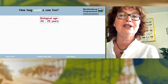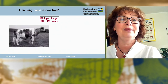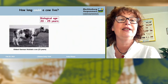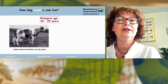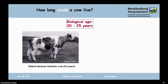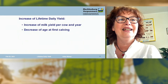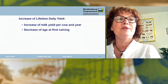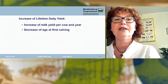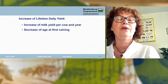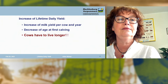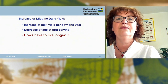Do you have such old cows? There are some — one of the oldest German Holstein cows you can see here. By the way, the name is Nonsense, in German Unsinn. The cow on the right-hand side became even 32 years old. Increase of lifetime daily yield is possible by increasing milk yield per cow per year, decreasing age at first calving, and cows living longer.